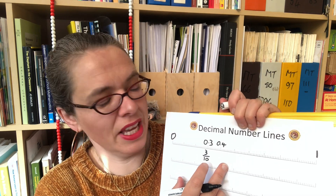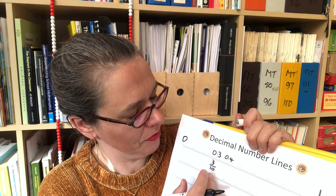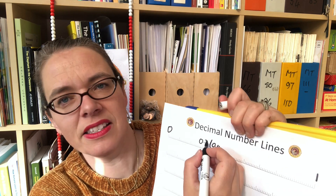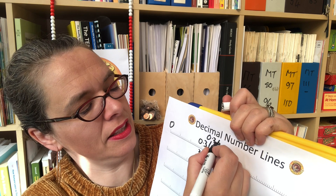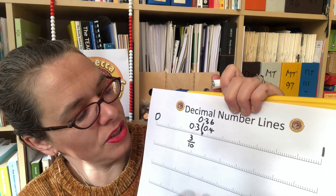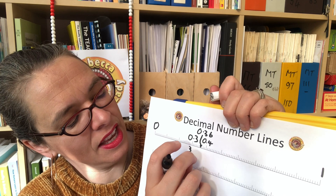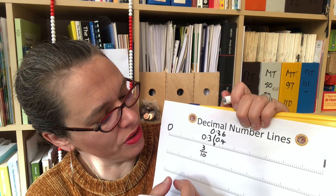Then we can have a discussion about what's going on between, say, 0.3 and 0.4 — three tenths and four tenths. What's going on here? We can look at one of these and say — maybe this one here, with a little arrow — that is 0.36, because we have got three tenths and six extra little bits. And what are those little bits? Well, there are a hundred of them in a whole, so they are one hundredths.